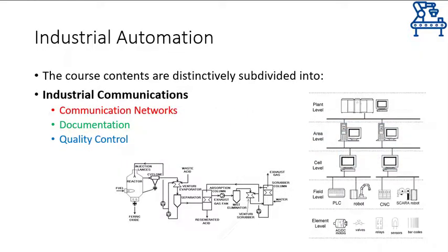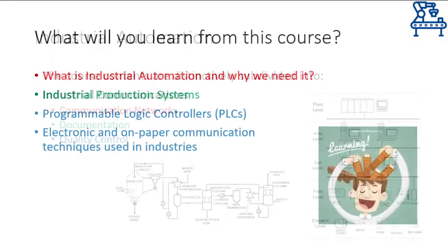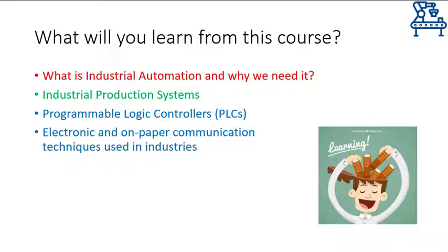The third section will be related to concepts and practices used for communication of data, signals, and all sorts of things in an industrial setup. We will talk about machine-to-machine communication, machine-to-human or vice versa communication, and human-to-human communication techniques and methods used in industries. We will focus our discussion on establishing standards of communication that are being used all around the globe. Discussion on quality control will also be included in this section. So all in all, we will cover these three broad areas: the need for industrial automation, programmable logical controllers, and standard electronic and on-paper communication techniques used in industries.